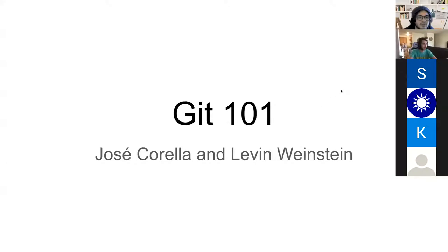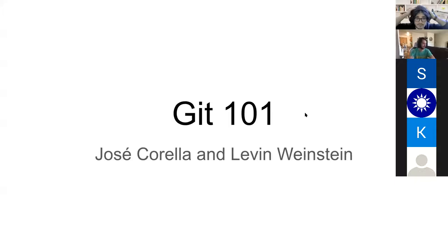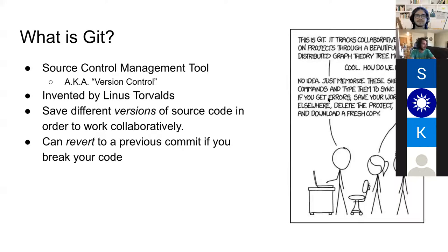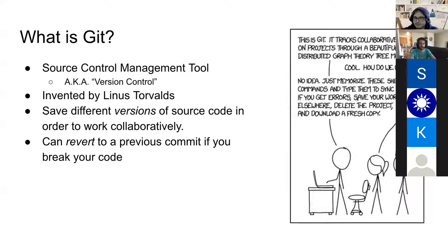Hi. Welcome to Git 101, led by Jose and with help from me. So, what is Git? We're going to start there. Git is a source control management tool, also known as version control. And it was invented by Linus Torvalds of Linux.